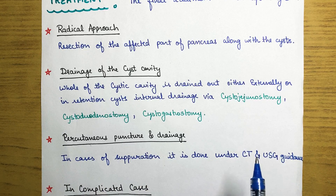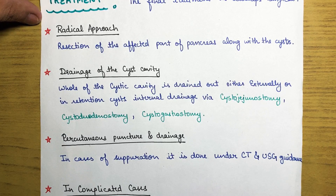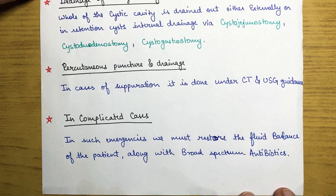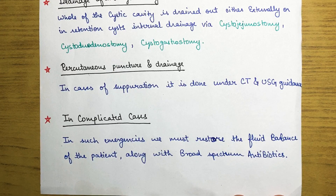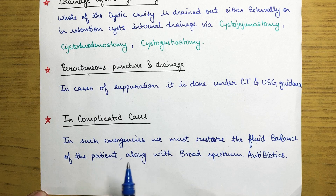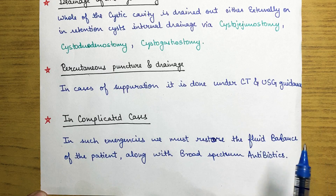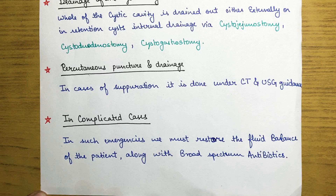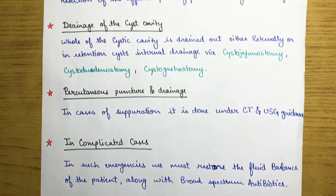A third surgical method is percutaneous puncture and drainage, done under CT and ultrasound guidance, particularly in cases of suppuration. In complicated cases involving bleeding, peritonitis, or bowel obstruction, the priority is to first stabilize the patient — restore fluid balance and administer broad-spectrum antibiotics to prevent or treat infection.